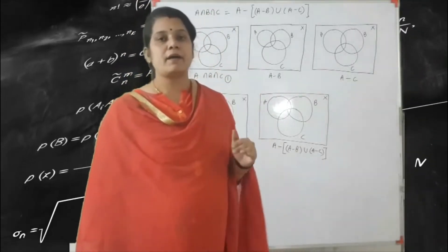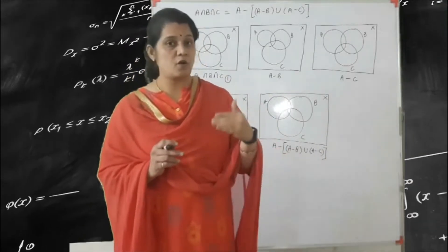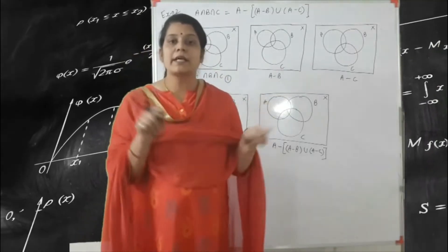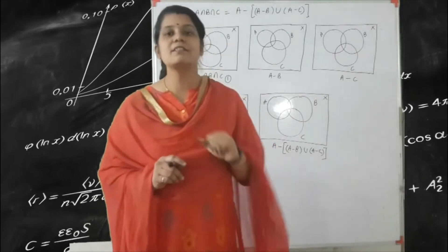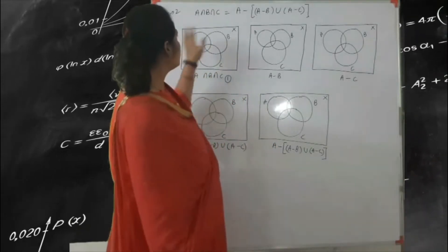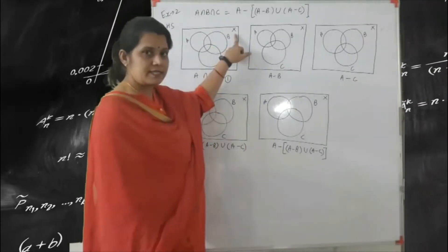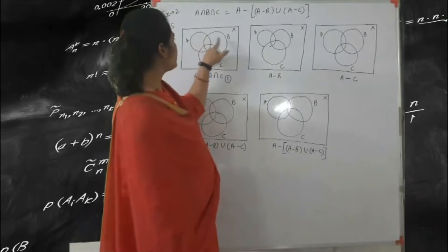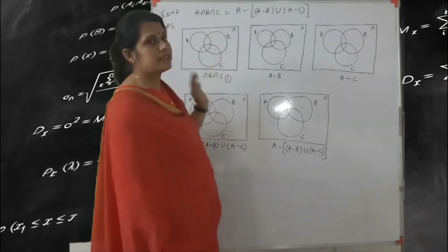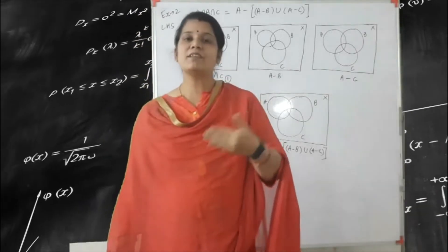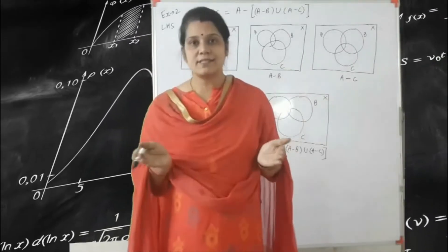Always keep in mind, first with the help of the Venn diagram, if we do the Venn diagram according to our question, so first you draw the rectangle — this is your universal set — and after that you draw circles here. So here we write A, B and C. We find out the A intersection B intersection C. What do you mean by A intersection B intersection C? It is the common and fundamental area according to all three sets.